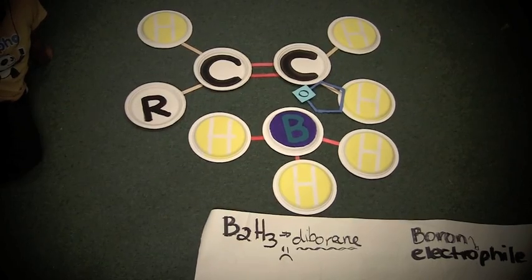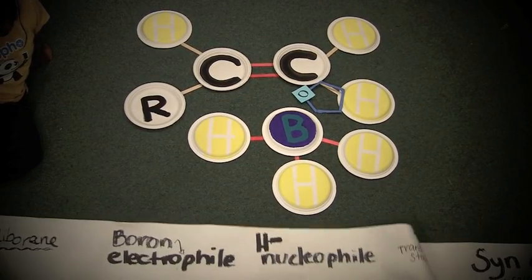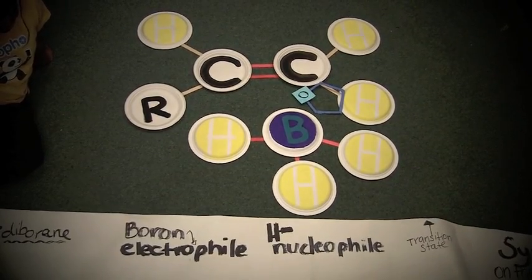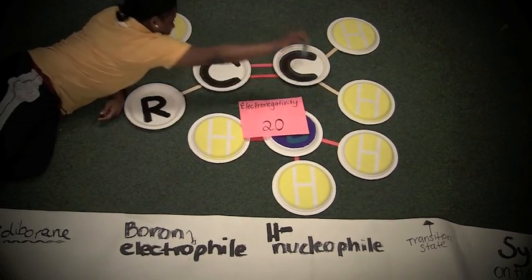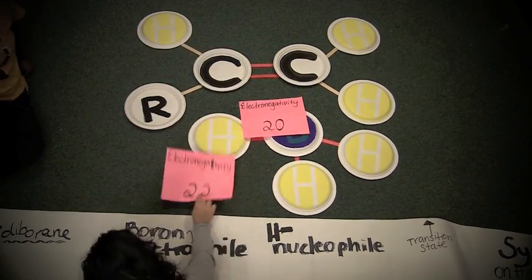Now in terms of electronegativities, there's something very important happening. Boron has an electronegativity of 2. Hydrogen has an electronegativity of 2.2.